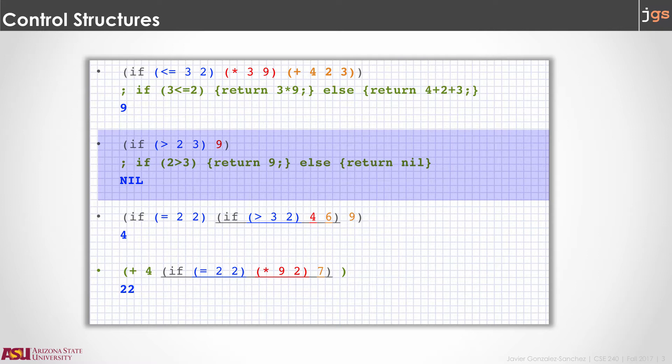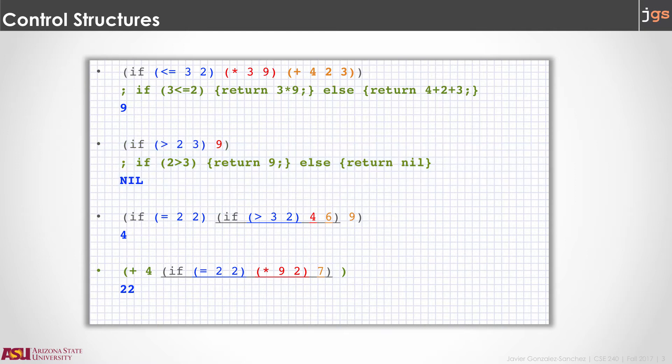In the second example, again the name if. This example has only two parameters, so you can think about this as an if condition without an else, or with the else empty. In this case the condition is going to be reviewed: if 2 is greater than 3. If the condition is true, the statement is going to print 9. However, because the condition is false, the result is going to be nothing, and that is represented as nil.